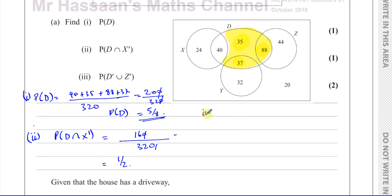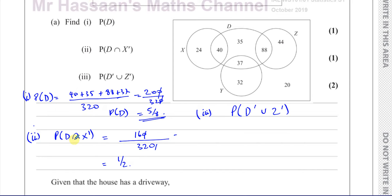Then part three: the probability of D complement union Z complement. Now here we have union. Union is a bit different from intersection — union means 'or', whereas intersection means 'and'. It has to have a driveway but no cars — D intersection X complement means it must be inside D and also outside of X. But here this union means 'or', it's kind of less strict.